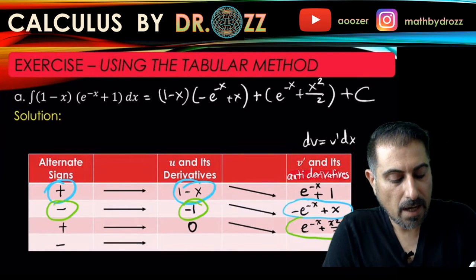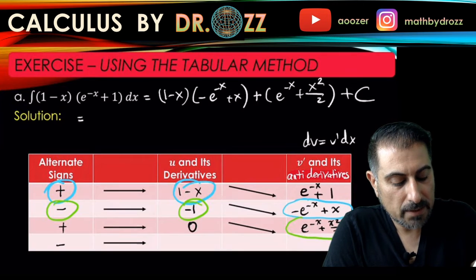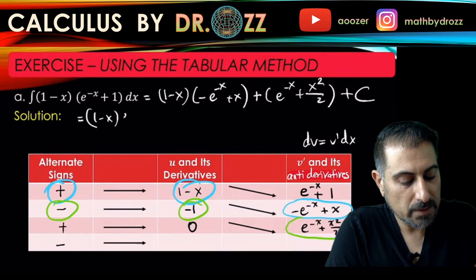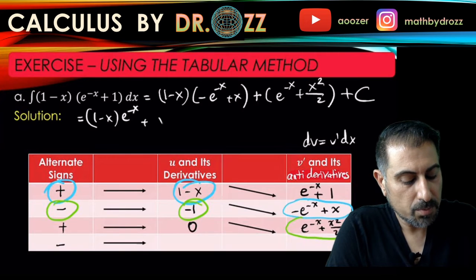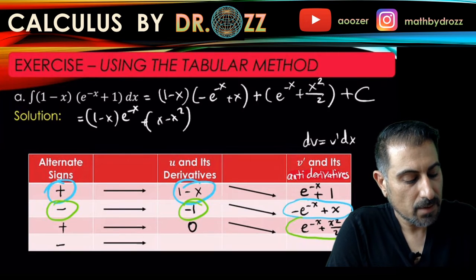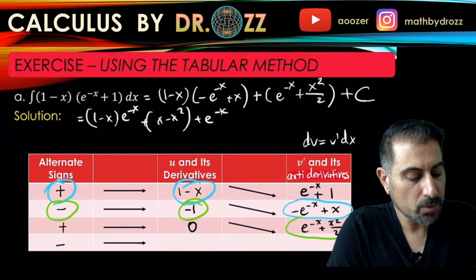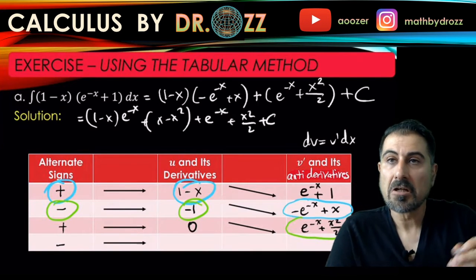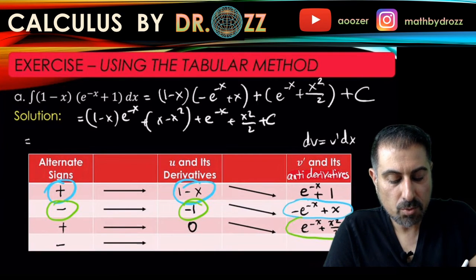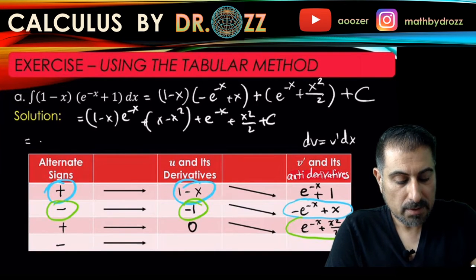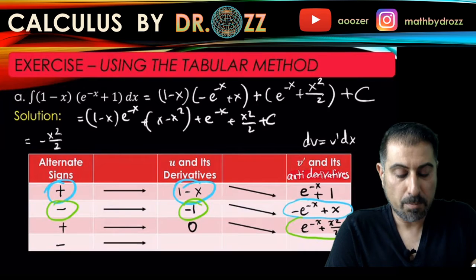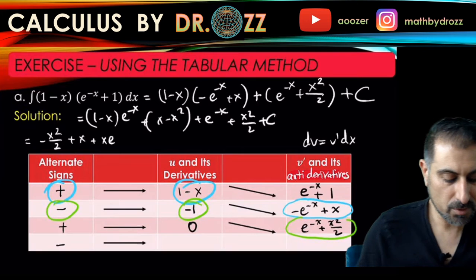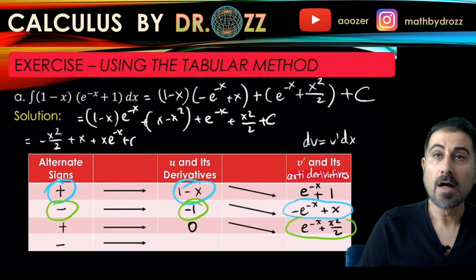So 1 minus x times e to the minus x plus x minus x squared plus e to the minus x plus x squared over 2 plus C. You can go ahead and simplify the like terms, so this should be like minus x squared over 2 plus x plus x times e to the minus x plus C. I was just cheating a little bit over there to simplify this expression.